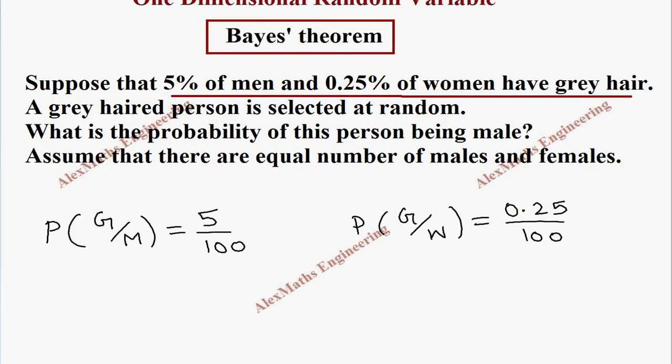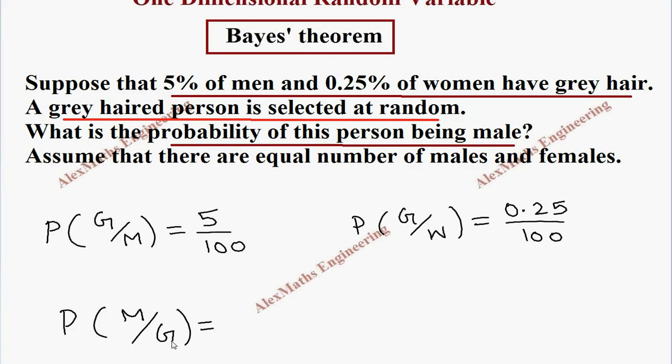Now, a grey-haired person is selected at random. So we selected a grey-haired person. So we know it is a grey-haired person. So we write it down here, what we already know or what has already occurred. And what probability we need, we will write in the numerator part. So here they are asking, what is the probability of this person being male. So they are asking for probability of the male. And we already know it is a grey-haired person.